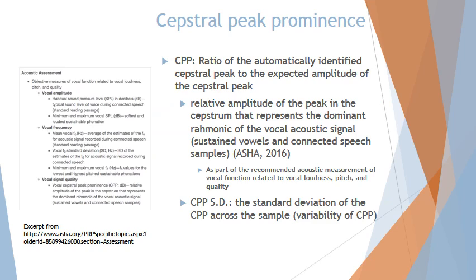The cepstral peak prominence, CPP, is the ratio of the automatically identified peak to the expected amplitude of the peak — the relative amplitude of the peak in the cepstrum, which represents the dominant harmonic of the acoustic signal in both vowels and connected speech samples. In layman's terms, what we tell our patients is that CPP essentially refers to how your voice stands out from noise — not background noise, but noise in the voice. If a patient has a really breathy voice, then the breathiness or hoarseness in the voice is the noise itself. So the ratio would be low because the noise would be very similar to the actual voice of the patient.